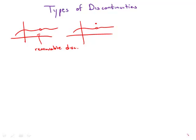Removable because we can just stick in a single point and fill the discontinuity, or another way to say it is we could easily construct a continuous companion function, which would not have that discontinuity. So that is type one.